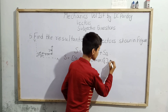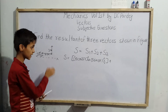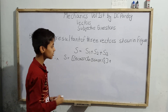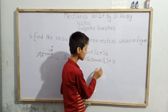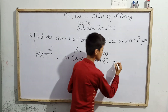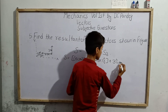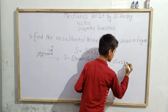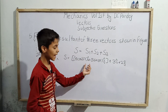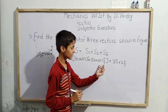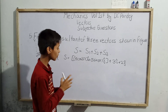Here also we put i-hat. Now for the three-meter vector, there is no angle of inclination given, so we directly put the value: plus three i-hat. And for the two-meter vector: plus two j-hat. So the full expression for S is: five cos 37° i-hat plus five sin 37° j-hat plus three i-hat plus two j-hat.